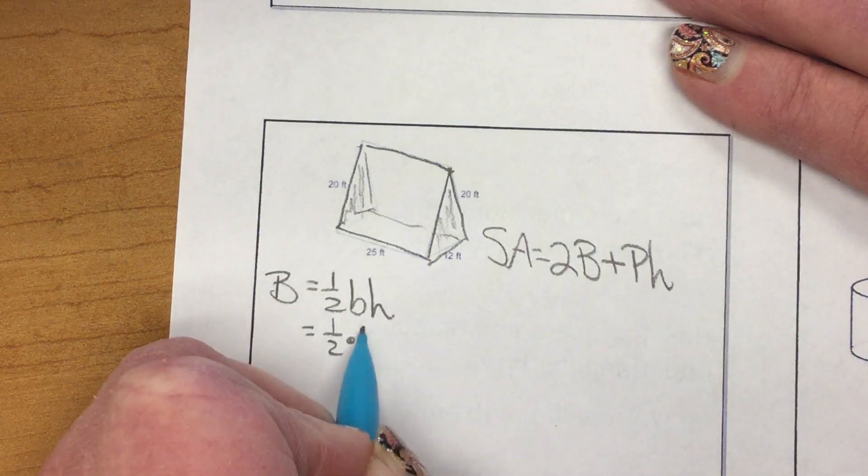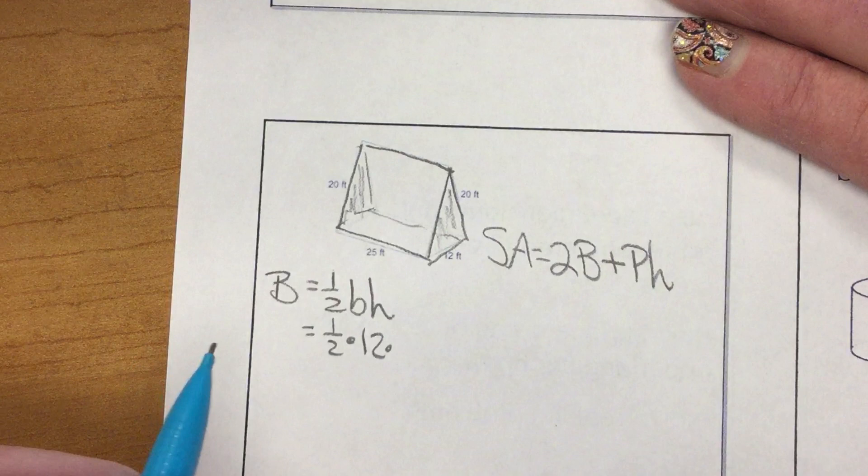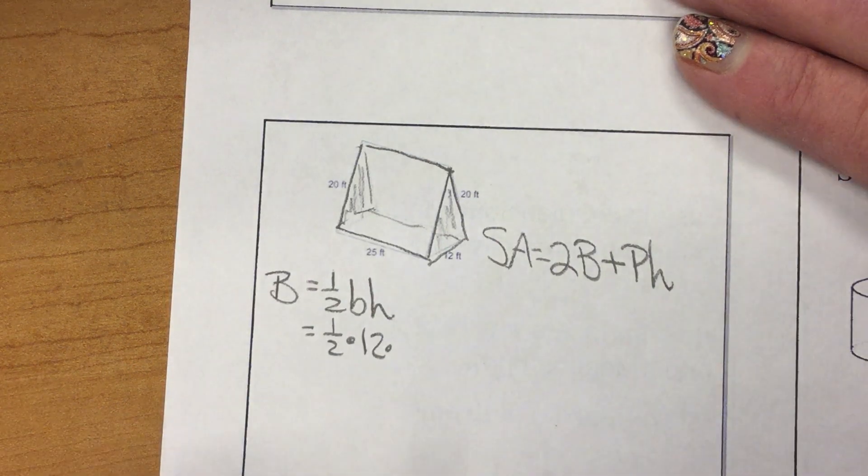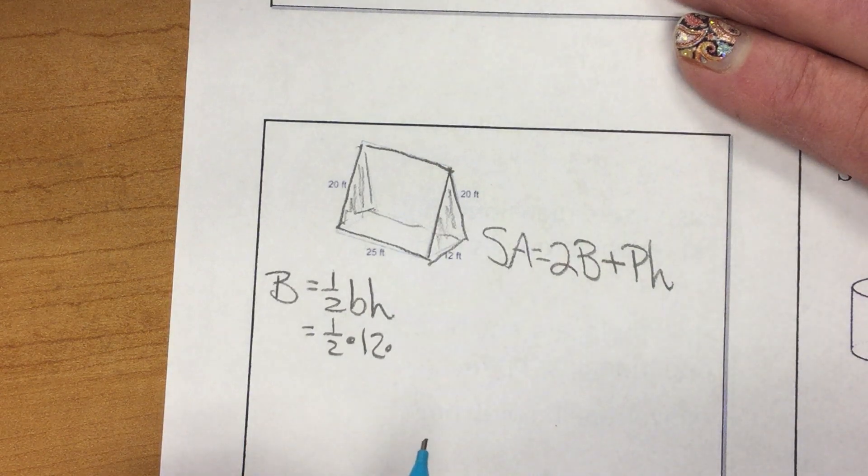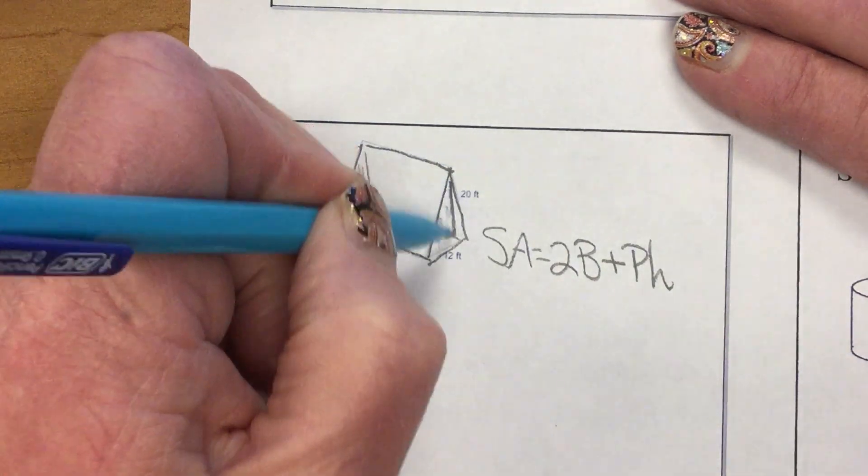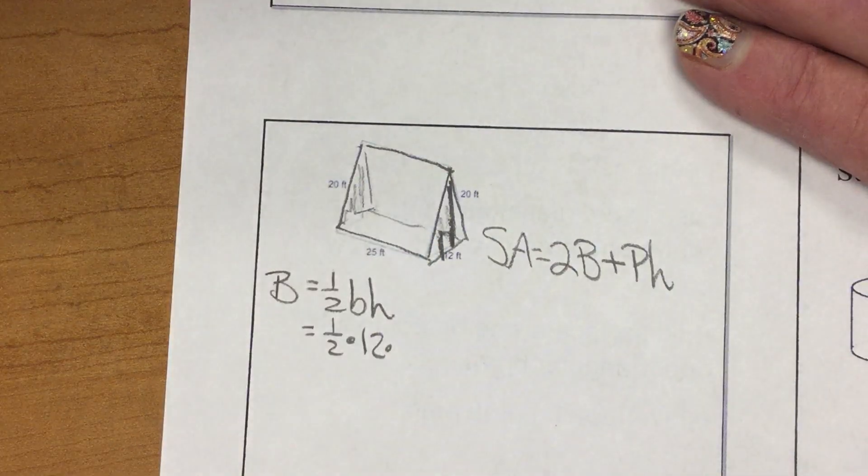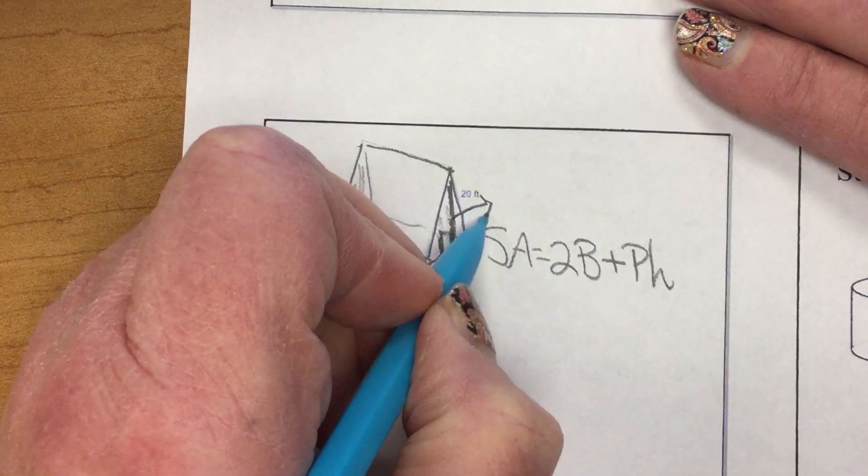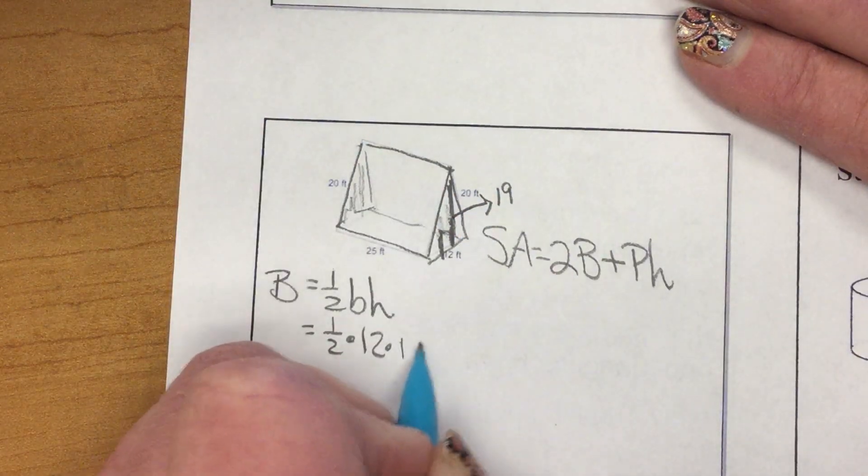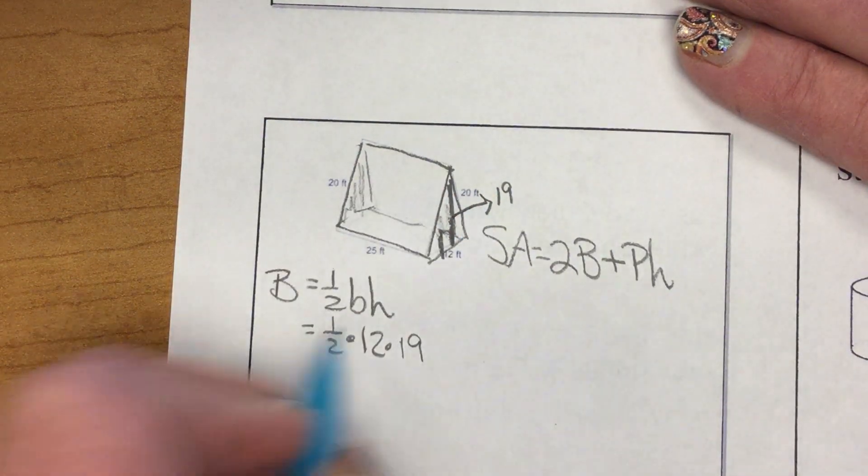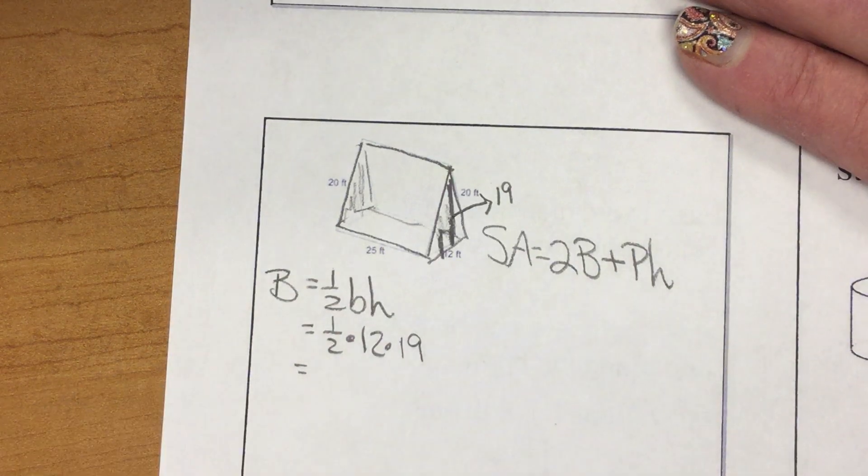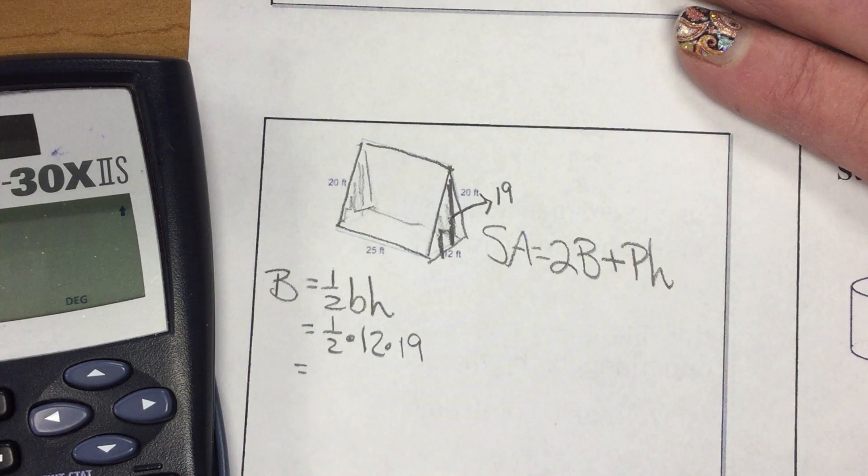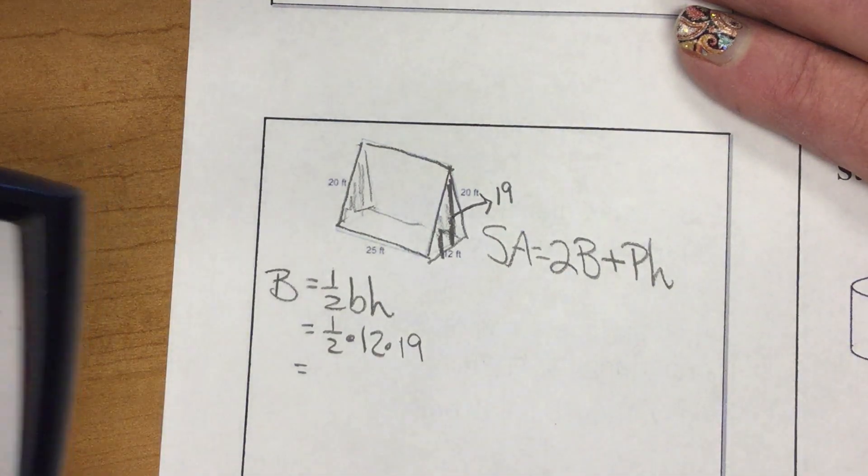Now, this is where it gets tricky. My base is 12. Now, I don't know the height, because I don't. So, I'm going to give you that height. We're going to worry about finding it later on, but I'm going to give you that height is 19. So, that is a 19. So, 1 half times 12 times 19, 114.